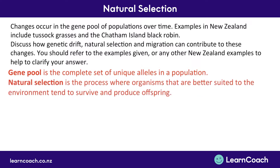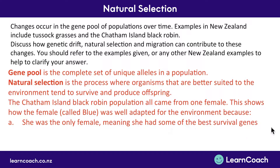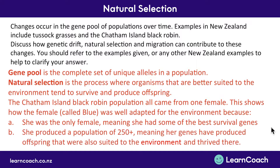For natural selection: the Chatham Island black robin population all came from one female, Blue, who was well adapted for the environment. This could be because she was the only surviving female, meaning she had some of the best survival genes. She produced a population of 250 or more, meaning her genes produced offspring that are well suited to the environment and they thrived there.